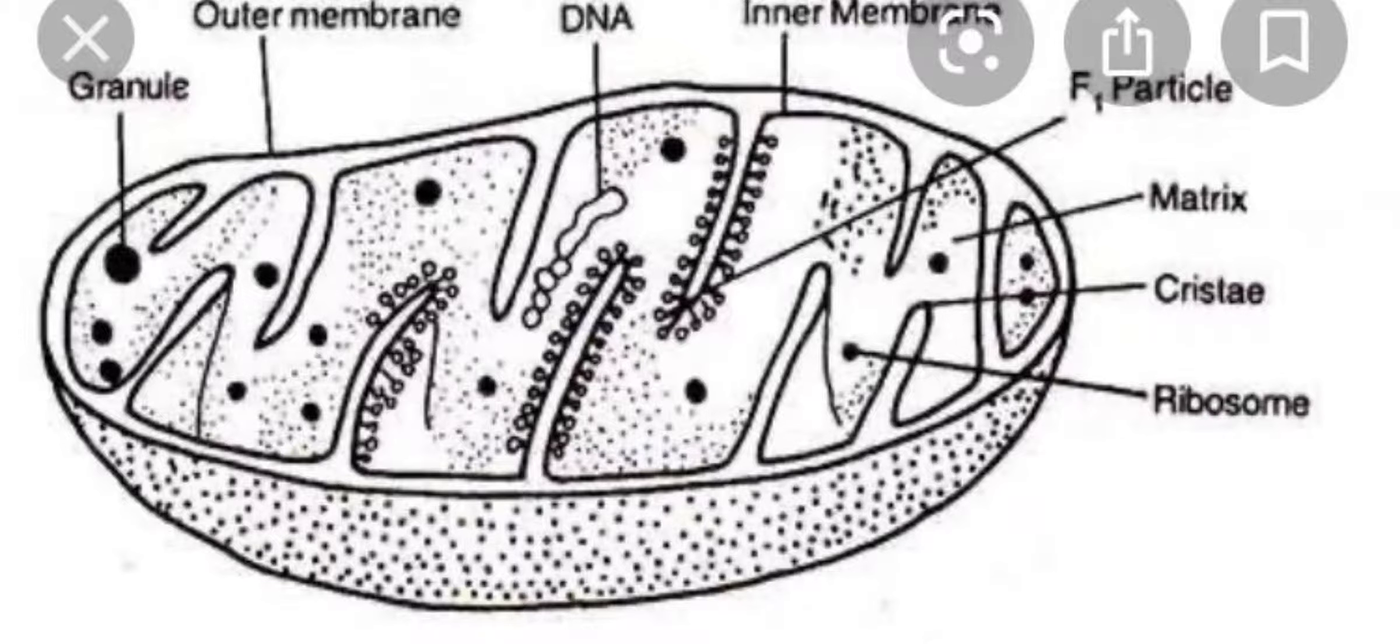We will begin our class with the first organelle, that is mitochondria. It is an autonomous cell organelle that has its own DNA and ribosomes. The ribosomes are 70S type, so it appears as a prokaryotic cell within a eukaryotic cell.